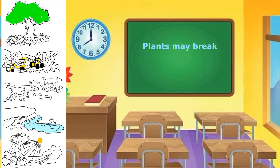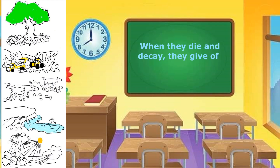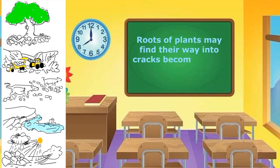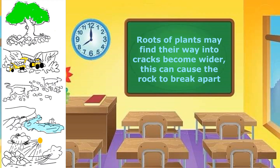Plants may break down rocks. Some plants grow on rocks. When they die and decay, they give off acid which slowly breaks them down. Roots of plants may find their way into cracks and become wider. This can cause the rock to break apart.